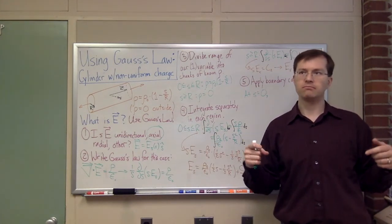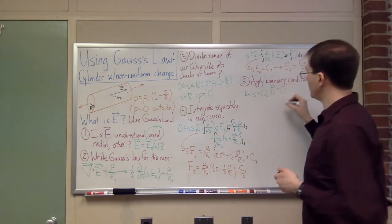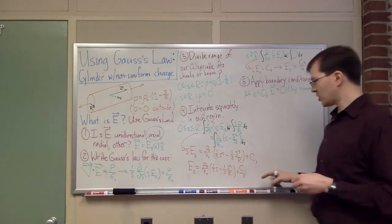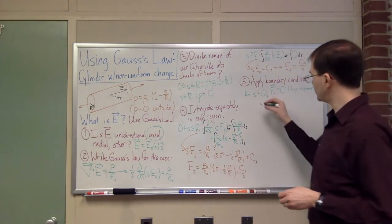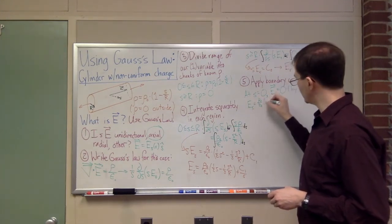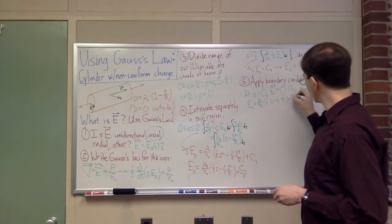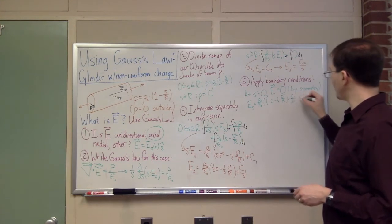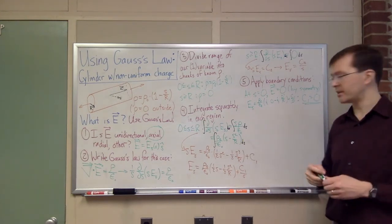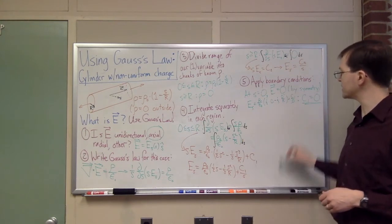At s equals zero, looking at my region-one expression, E_s equals rho-naught over epsilon-naught times (one-half · 0 minus one-third · 0² over r) plus c1 over 0. C1 over zero would be infinite, so the only way this makes sense is if c1 equals zero. I have to conclude that my constant of integration c1 is zero, or else I'd get an infinite electric field there.